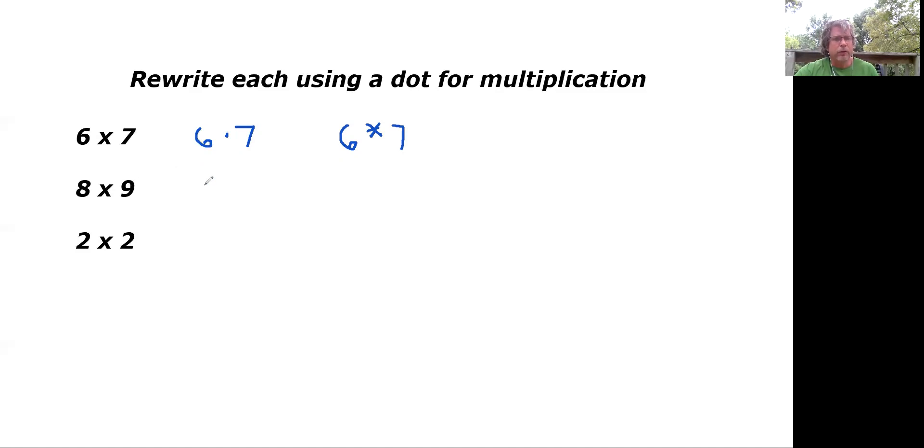Eight times nine, we would just write that as eight dot nine. That's another way to write multiplication.